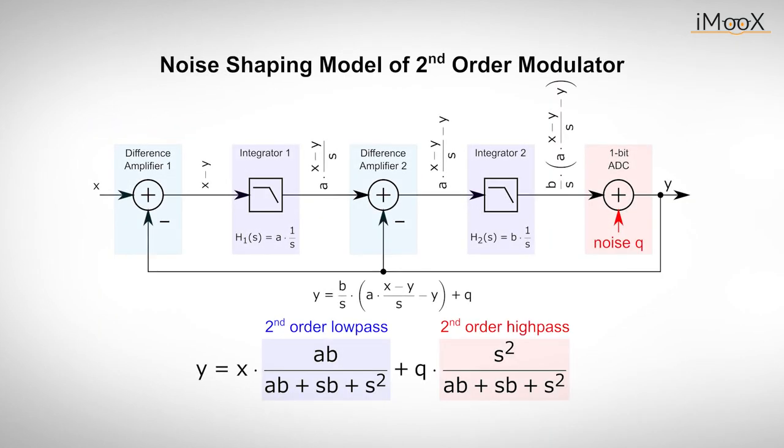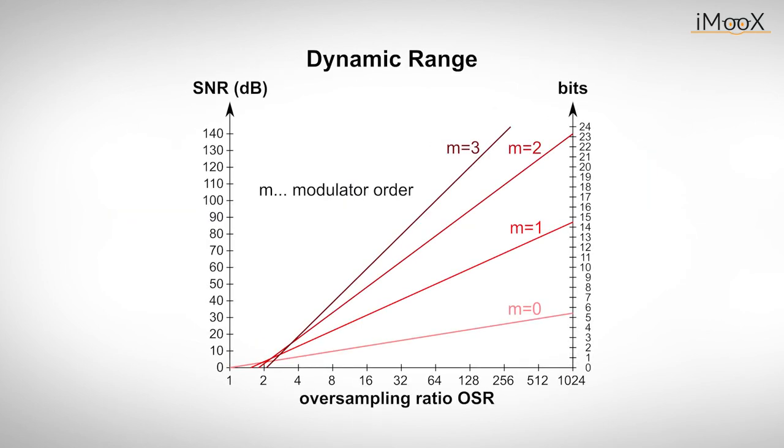This example shows a second-order modulator. With each additional stage an integrator is added that further suppresses the quantization noise because each stage increases the order of the high-pass filter. This diagram shows the effect of oversampling and higher order modulators on the dynamics of the ADC. The dynamic range and the effective number of bits are displayed as a function of the oversampling ratio and modulator order for a one-bit oversampling ADC.